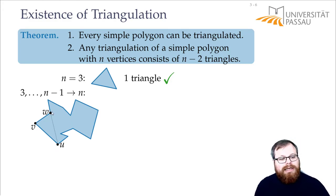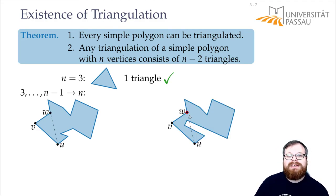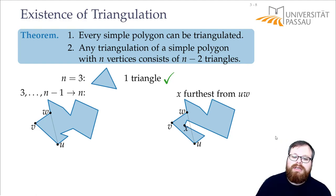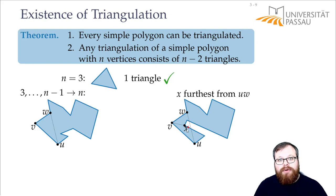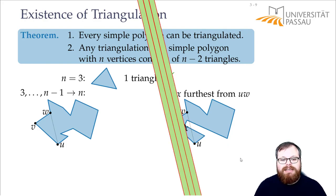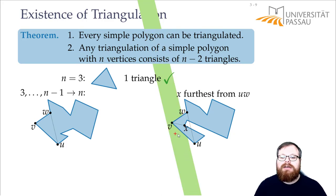If we can directly connect them with an edge, then this separates the polygon into one triangle and one other polygon with n minus one corners. If the segment intersects the boundary, then there are some corners inside this triangle. And we pick the corner that is furthest away from uw. And then we connect this corner to x. How do we know that we can add this segment? Well, x is the furthest away from uw. So if you just look at this strip here, there cannot be any other vertex of the polygon in it. So there cannot be any other corner.